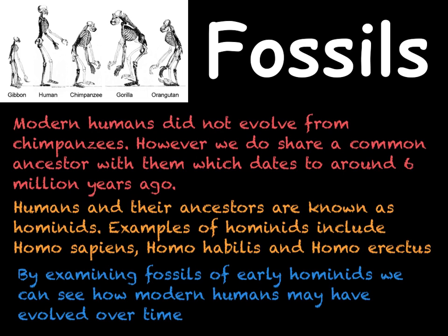It is important to note that when we are talking about the evolution of humans this is only a current theory. It has taken scientists a long time to try to discover how humans have evolved, leading to many different theories based on the data. Sometimes data does not always support the theory — for example, a much smaller hominid was recently discovered in Indonesia which doesn't quite fit with the fossil record. Just because we have a theory and supporting data does not necessarily mean the theory is true. The theory presented here is the one currently most accepted by scientists, as there is lots of data that supports it.